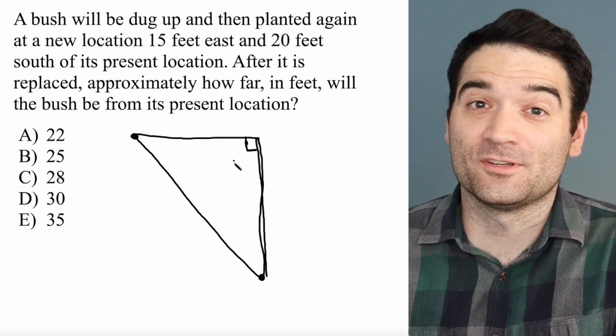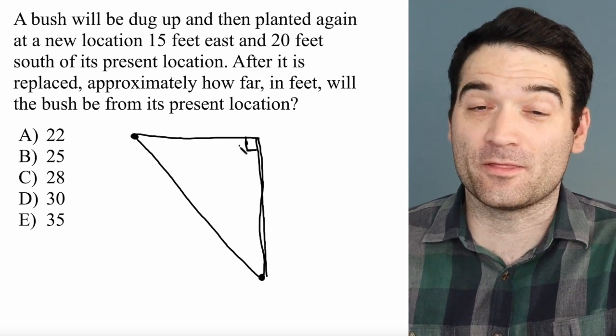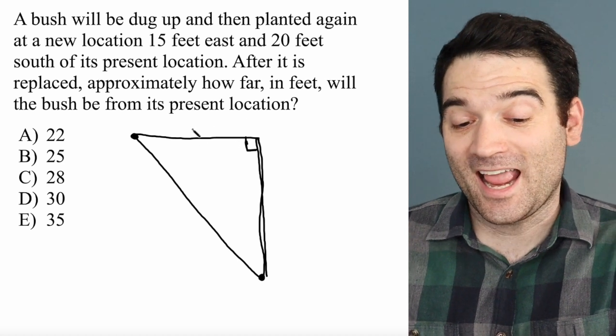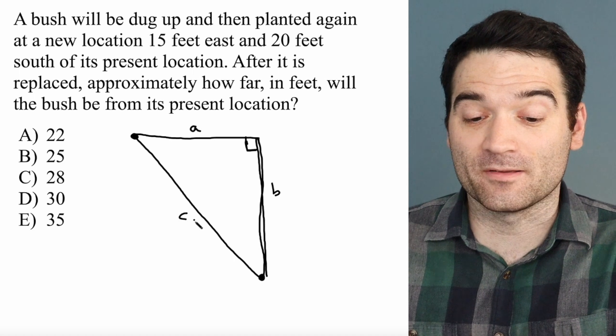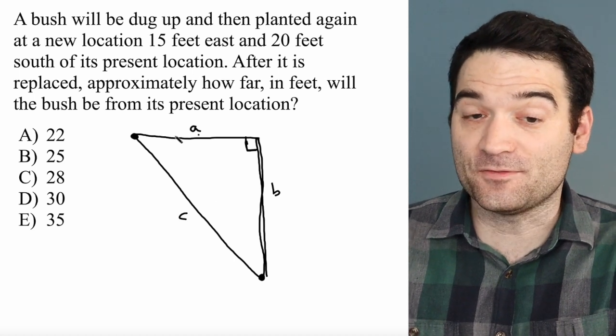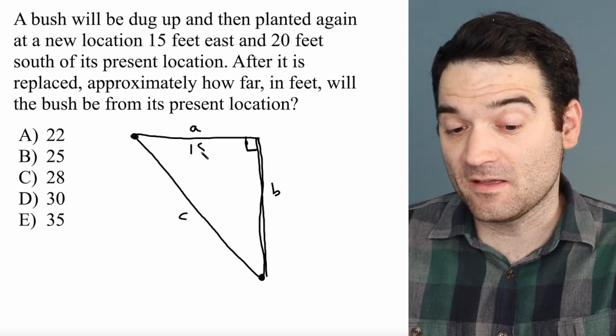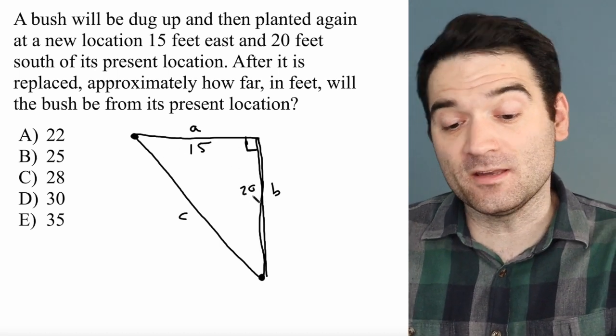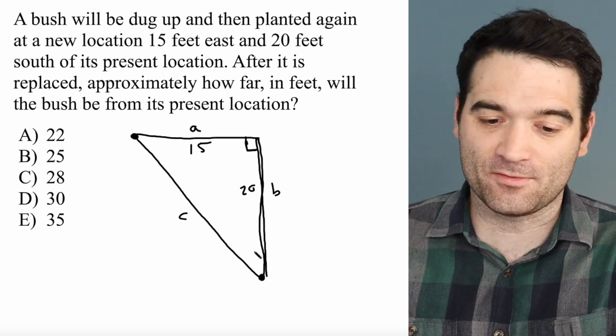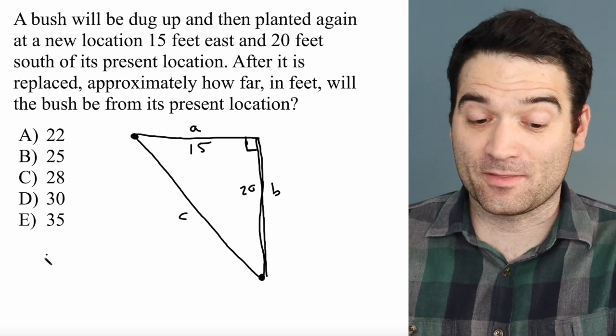And if you know anything about right triangles, you should know the Pythagorean theorem, which tells us that A squared plus B squared is equal to C squared. Well, in this case, A is 15 feet. We moved 15 feet to the east. And B is 20 feet. We moved 20 feet to the south. So we can just set up our Pythagorean theorem.